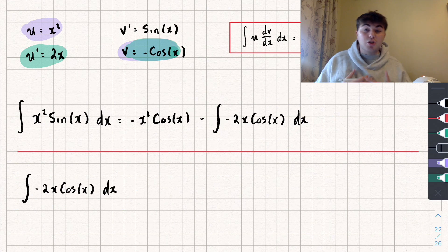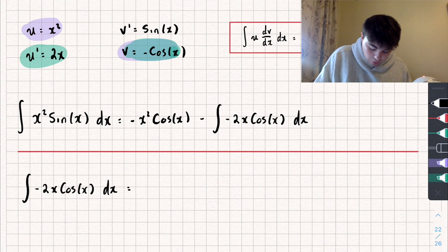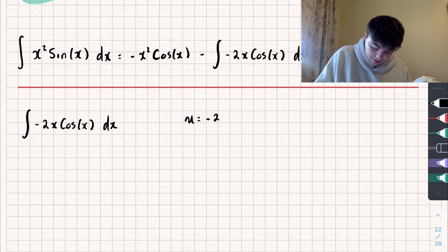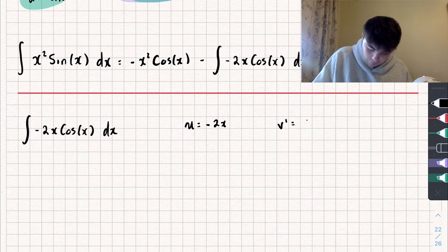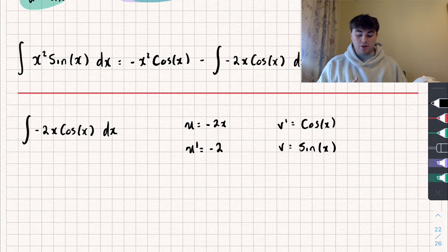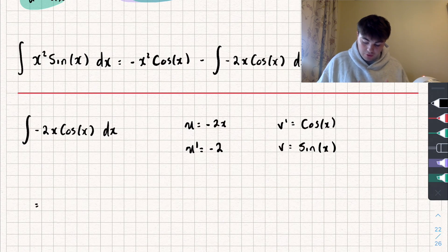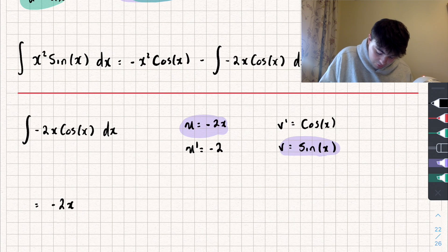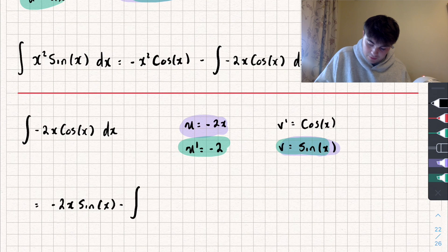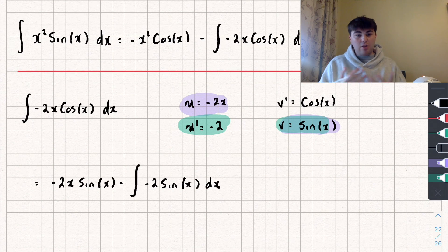I'll draw a line and work out just this inner integral, then substitute the answer back in at the end. So for this second application: I'm going to set u equal to negative 2x and v' equal to cosine of x. Taking the derivative of u gives negative 2, and integrating v' — cosine of x integrates to sine of x. Using the integration by parts formula, that's going to be u times v, so negative 2x sine of x, subtract the integral of v times u', which is the integral of negative 2 sine of x with respect to x — and that is something I can integrate much more easily.